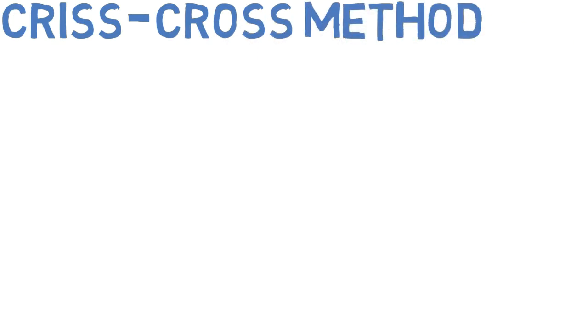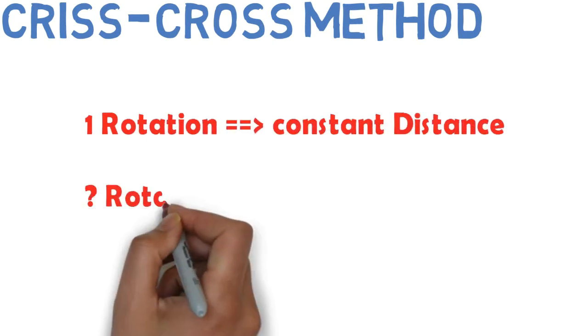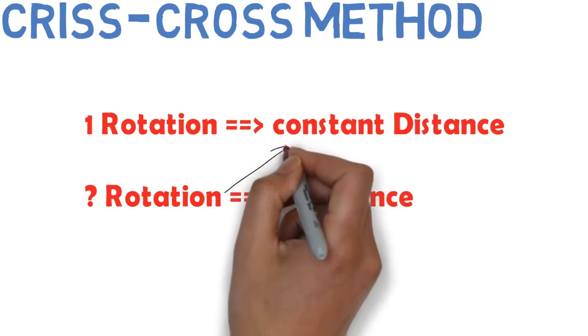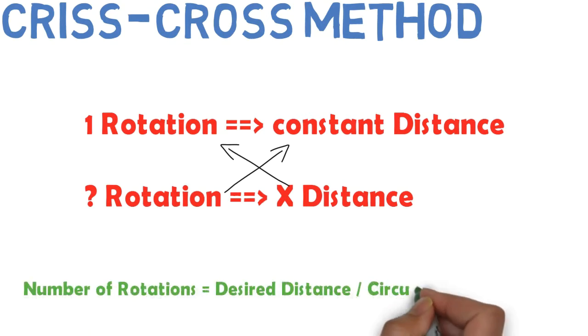The criss-cross method asks the following question: if one rotation crosses this amount of distance, how many rotations will cross this specific distance? So we can deduce that the equation now is number of rotations equals the desired distance divided by circumference distance.